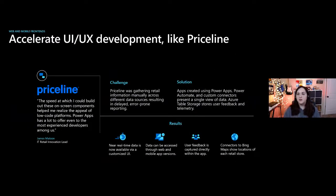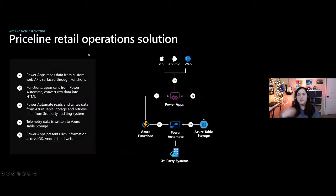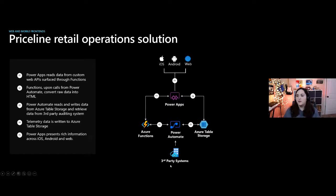I wanted to show a couple of case studies — how are businesses actually using this? Priceline went all in on the Power Platform from their development team when they realized how fast they can build screens and use components to save time — build a component once and use it in multiple applications. The architecture they came up with: a Power App that reads data from custom Web APIs surfaced through Azure Functions, using Power Automate and storing data in Azure Table Storage, getting data from third-party systems up into Power Automate — a great holistic solution.